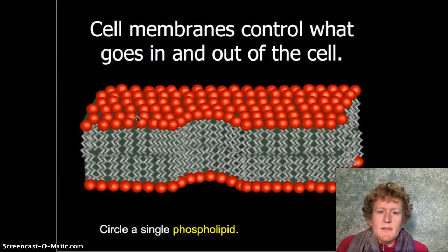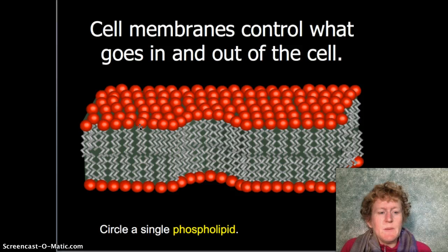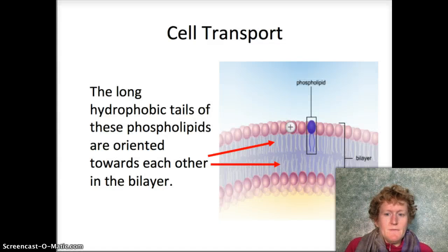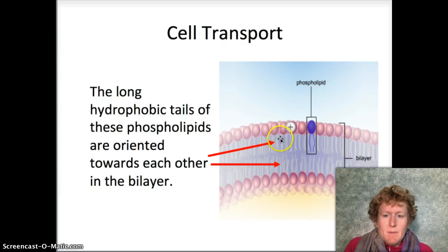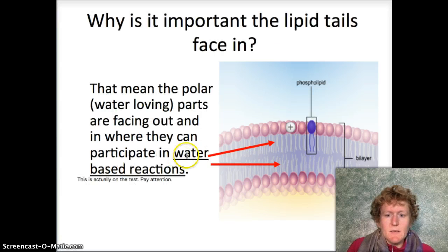Organisms have cell membranes that control what goes in and out of the cell. These cell membranes are composed of phospholipids. Here's a single phospholipid — you can see them organized into a row, which is half of the phospholipid bilayer. Bi means two, and there are two layers of phospholipids making up most of a cell membrane. The phospholipids are lined up so the polar end faces out to participate in water-based reactions — polar is hydrophilic, meaning water-loving. The hydrophobic, water-fearing part stays in the middle, while the hydrophilic part faces the outside and inside of the cell.